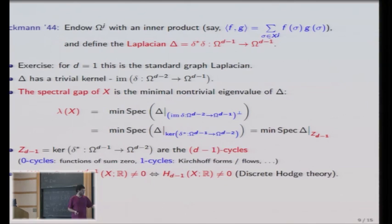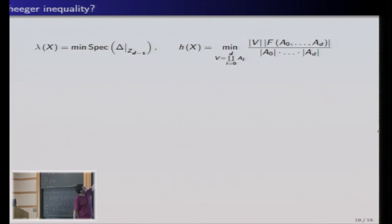And again, and this is due to Eckmann, it vanishes exactly if the d minus 1 real homology is non-trivial. So this is part of a more general discrete Hodge decomposition, which is exactly what you have in Riemannian settings, except that you don't need manifolds. It works for any complex. So if the homology vanishes, so if the spectral gap vanishes when the homology is non-trivial, we want to say again that if the spectral gap is large, then somehow the homology should be very trivial. And we want to ask if this implies somehow expansion.